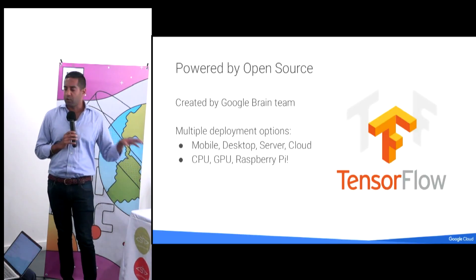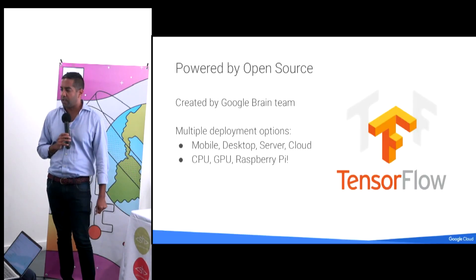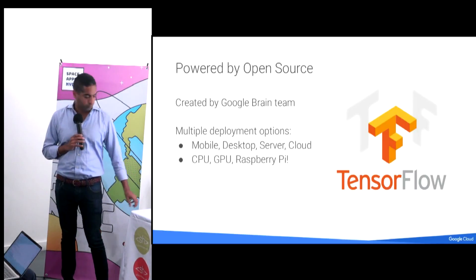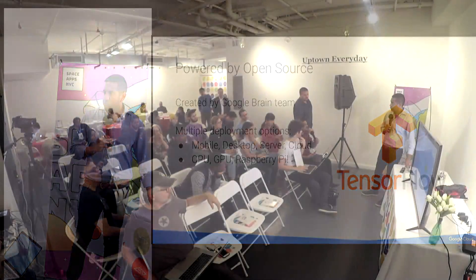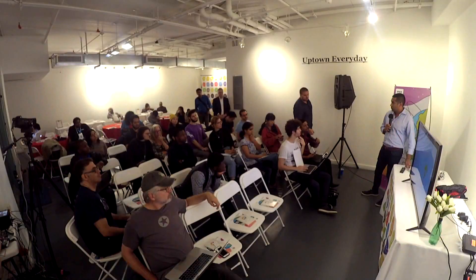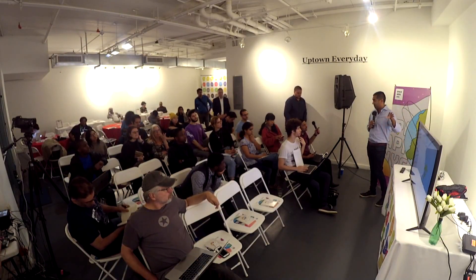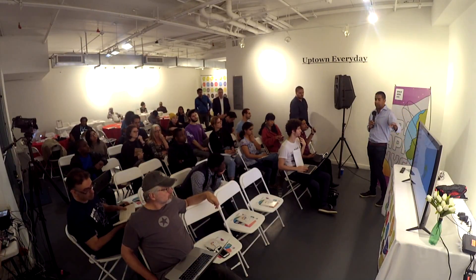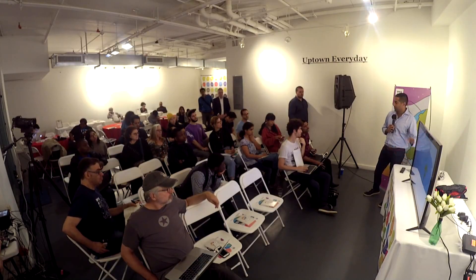Smart reply is an open-source project, so if you want to train your own model using the same software you can download it from GitHub right now. You can do machine learning this way, but it's pretty high-end. You need the skills, though it doesn't mean you can't learn it — there are much easier ways to do it as well.